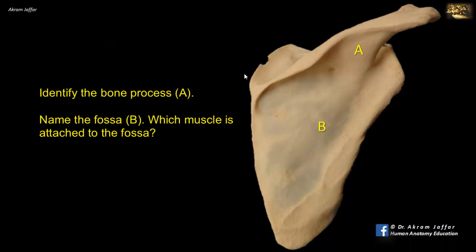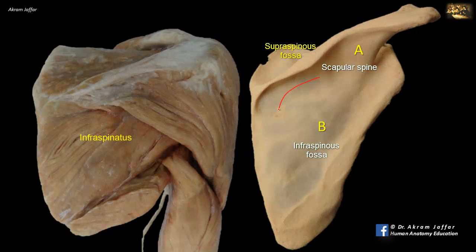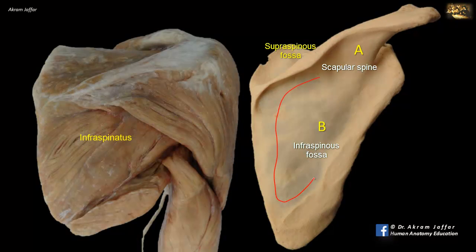Identify bony process A. This is the spine of the scapula on its posterior aspect. Name fossa B and which muscle is attached to it. The spine of the scapula divides the posterior aspect into the supraspinous and infraspinous fossa. Attached to the infraspinous fossa is the infraspinatus muscle, a member of the rotator cuff group of muscles.